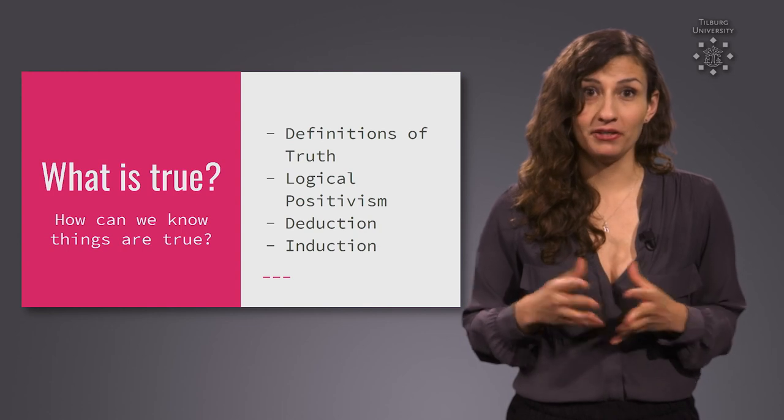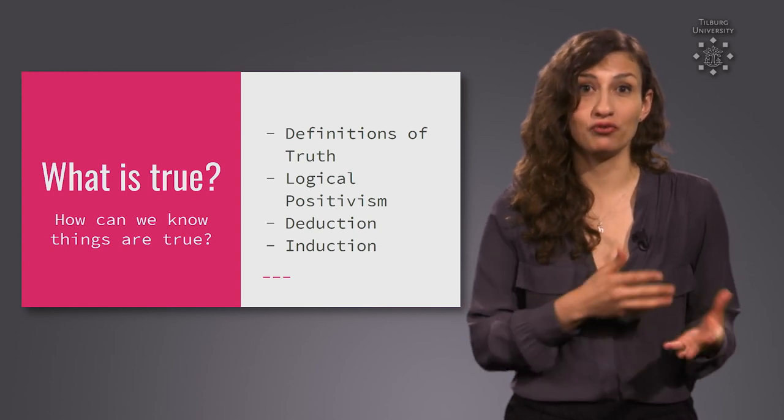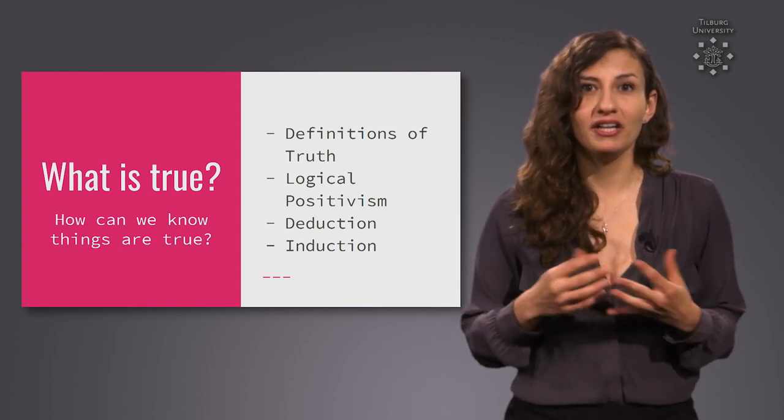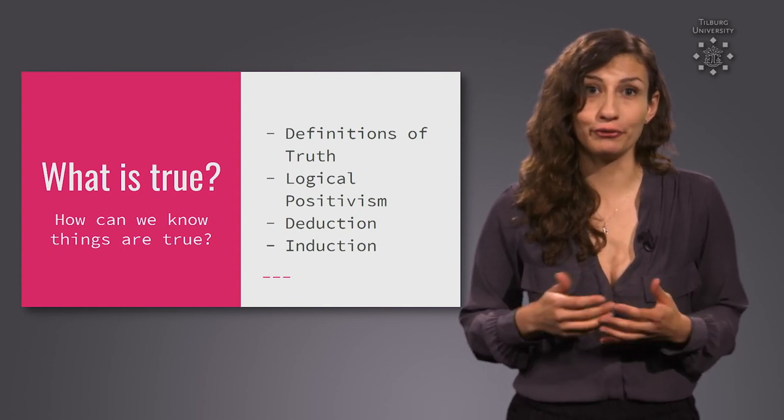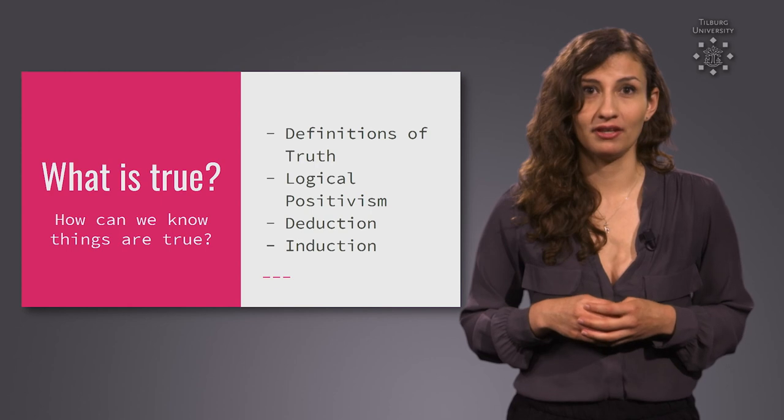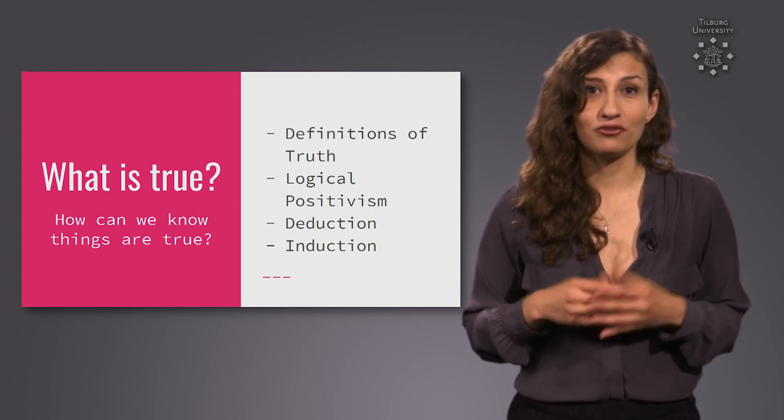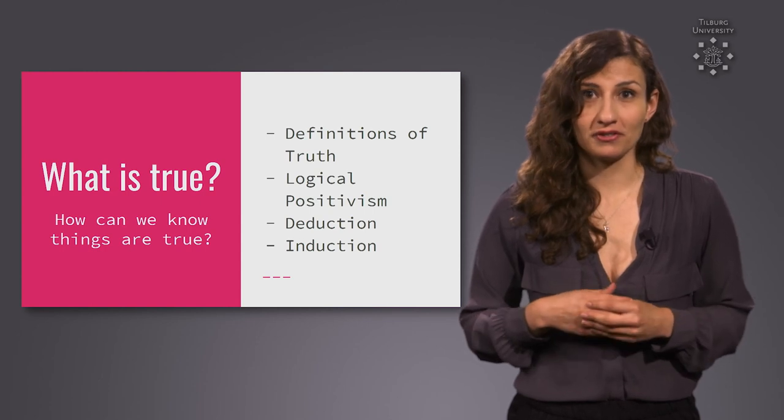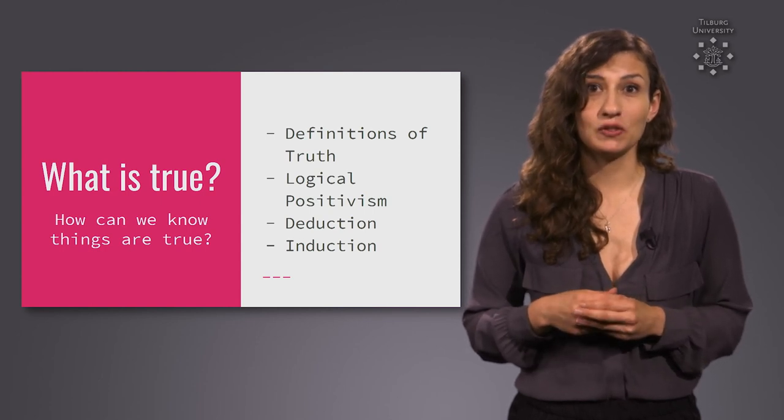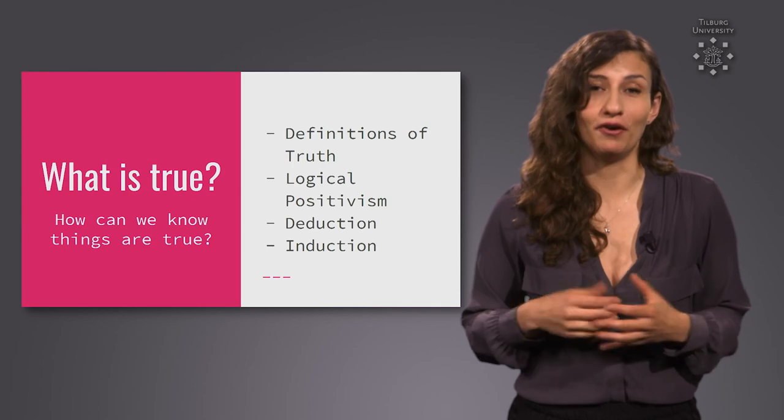In both cases, empirical observations, seeing what's really out there in the world, are really important to determine if statements about the real world are indeed true. Now that we've seen that this is tricky to find out if things are true, in the next part of the course we will try to see if at least we can find out what things are false.